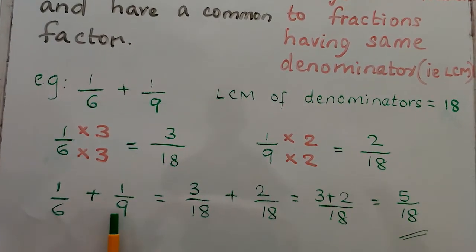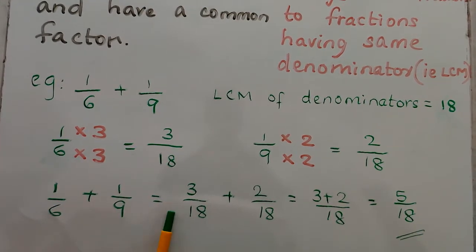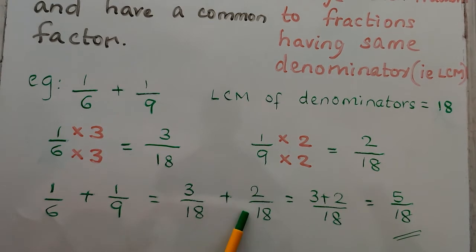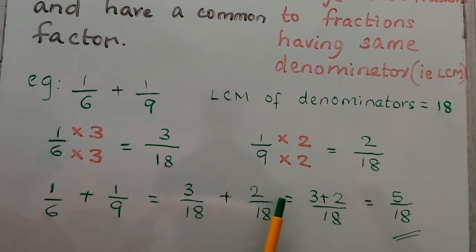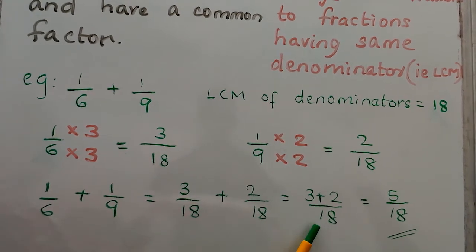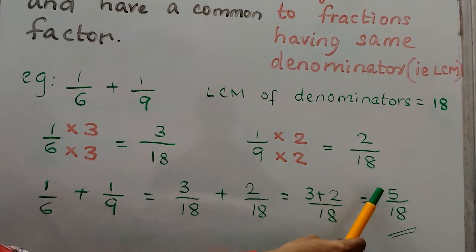So 1 by 6 plus 1 by 9 becomes 3 by 18 plus 2 by 18, which equals 5 by 18.